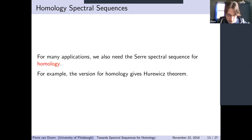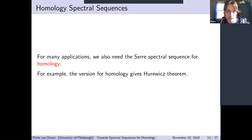Now we want the corresponding spectral sequences for homology. The Serre and Atiyah–Hirzebruch spectral sequences exist for both cohomology and homology classically, so we want the homology versions too. That turns out to be harder because homology is harder to work with in HoTT than cohomology. Applications include: using the homology Serre spectral sequence to prove the Hurewicz theorem—specifically that the first homology group of a space is the abelianization of the fundamental group, and the higher Hurewicz theorem stating that for connected enough types, the first non-trivial homotopy group and homology group are isomorphic.